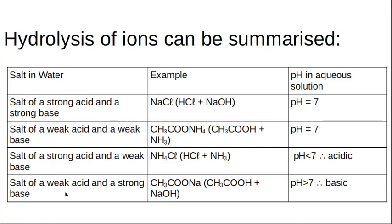If you have a strong acid and a strong base — like hydrochloric acid and sodium hydroxide — you get sodium chloride and water, and the pH will be 7. If you have a weak acid and a weak base, the pH is also 7, but this reaction doesn't really want to happen. Mixing vinegar and ammonia gives ammonium ethanoate — also pH 7 — but in a titration you never get a clear endpoint, so it's basically ignored.